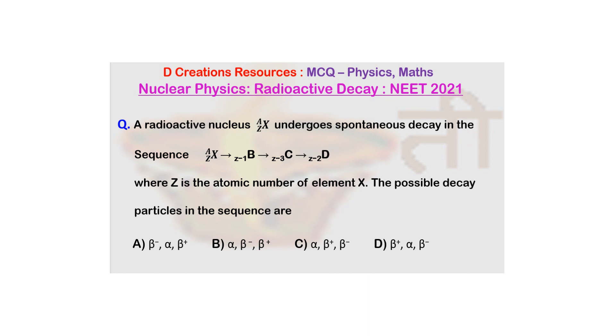Where of course, as I had mentioned, Z is the atomic number of element X. The possible decay particles in the sequence are - now the options are: A is beta minus, alpha, beta plus; B is alpha, beta minus, beta plus; and C is alpha, beta plus, beta minus; while the last option D is beta plus, alpha, beta minus.